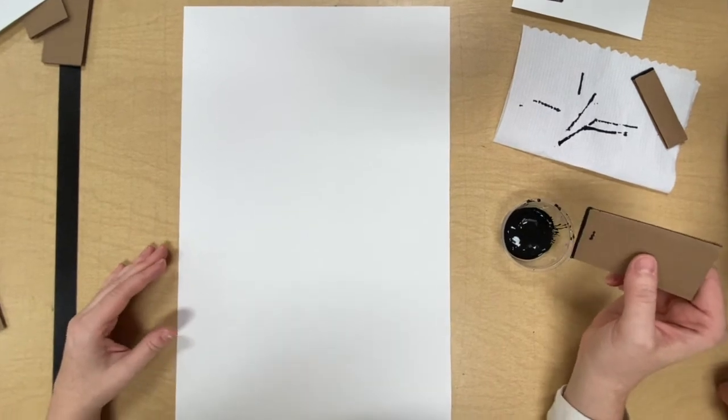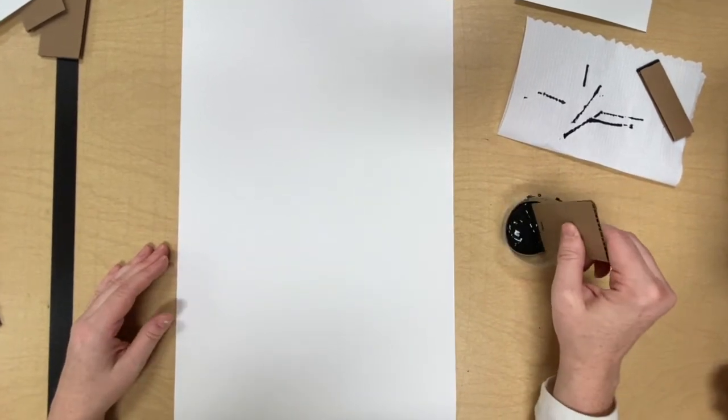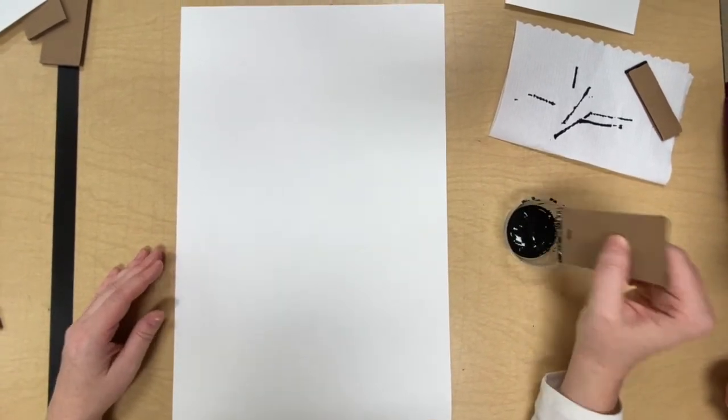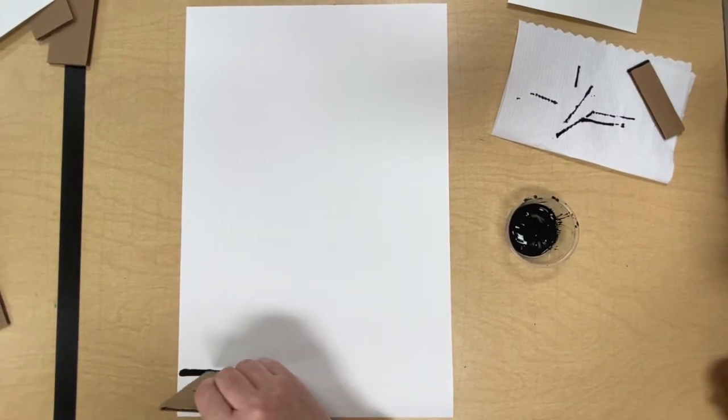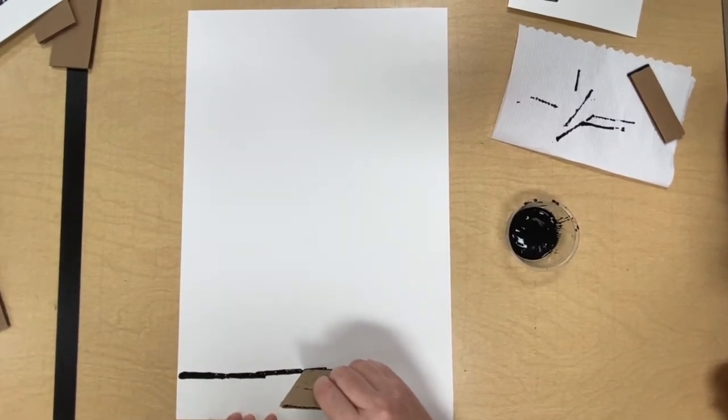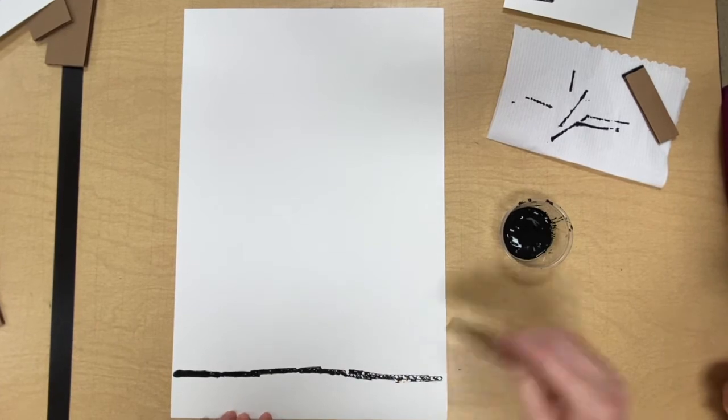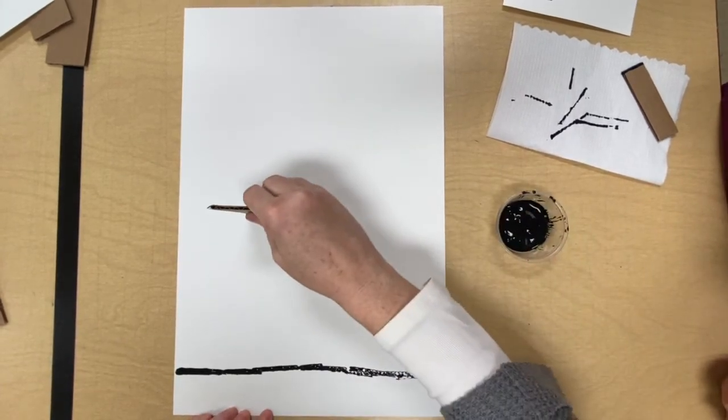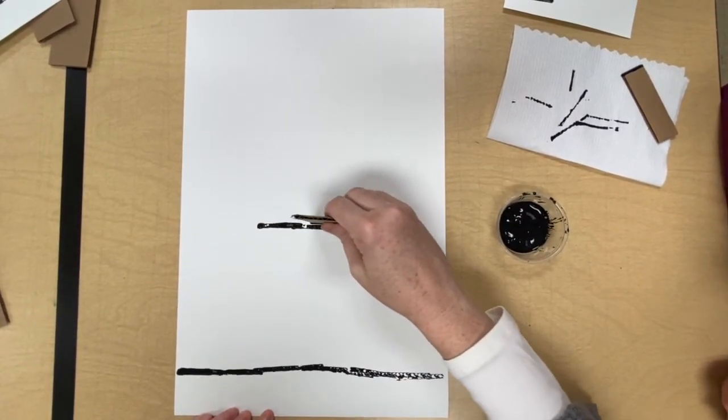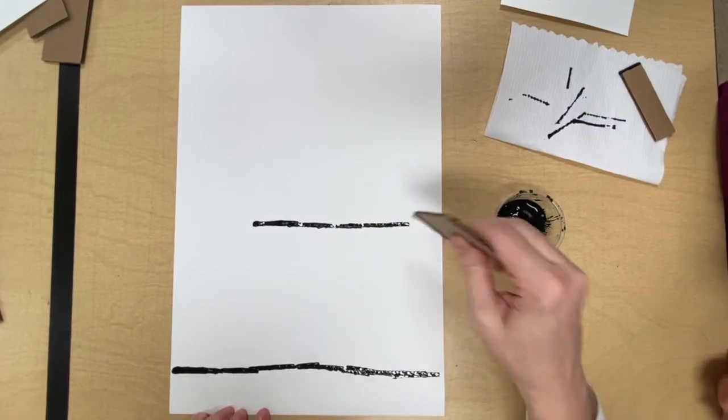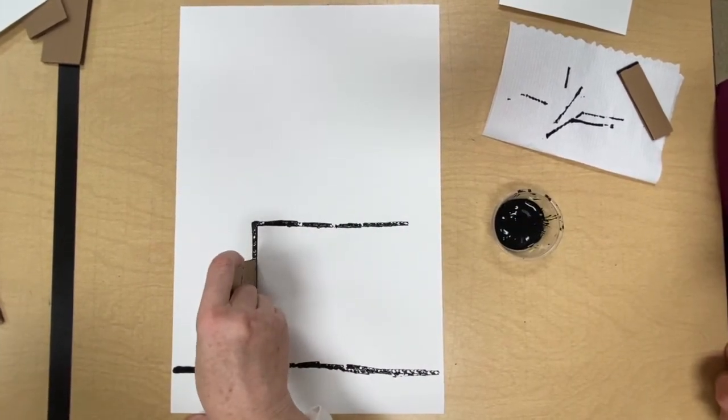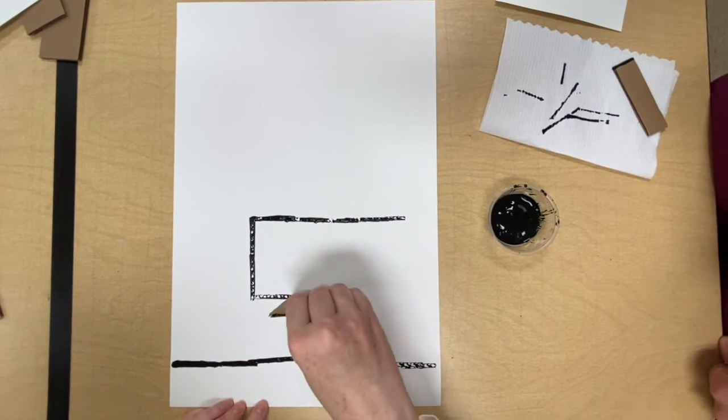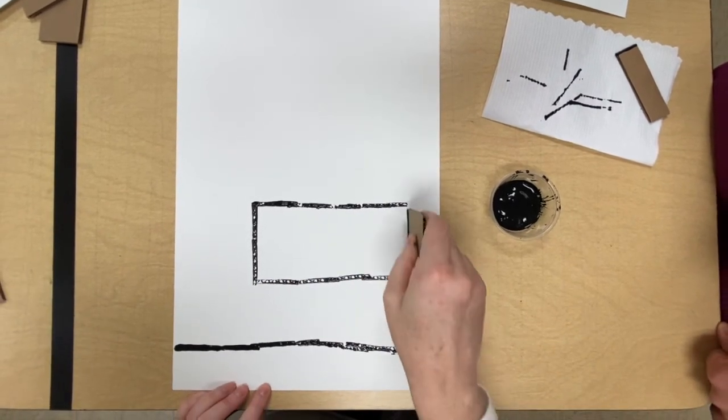Let's do one more together. Remember I like to start with the horizon line at the bottom of my paper. This time I have my paper tall like a building. I wonder what I'm making that would need a tall piece of paper.